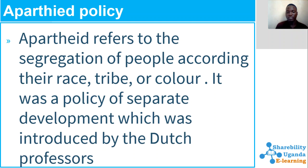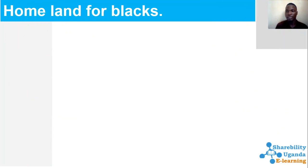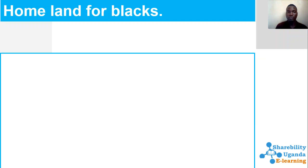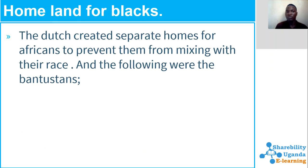Now we are going to look at the homelands for the blacks. The homeland of the blacks was sometimes called the Bantu stances. The Dutch created separate homes for Africans to prevent them from mixing with their race. The Dutch sectors created this segregation, resulting in creating over ten homelands for the blacks, which they named the Bantu stances.